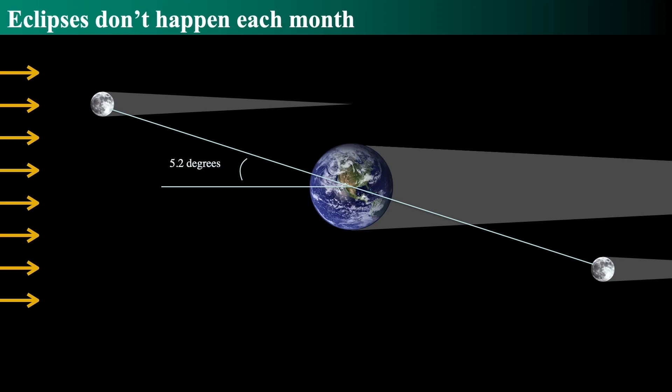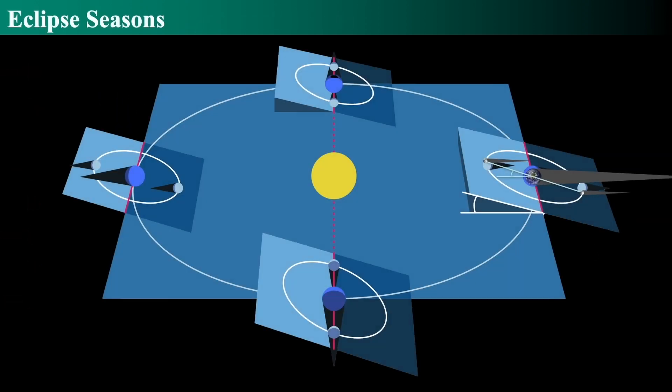So the moon doesn't always pass through the shadow. And therefore, we have to look for eclipses during eclipse seasons. And eclipse seasons are when the line of nodes, which is that red line, lines up.